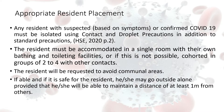Ideally, the resident should be accommodated in a single room with their own bathing and toileting facilities. If this is not possible, it is recommended that the resident be cohorted in groups of two to four with other contacts. The resident should be requested to avoid communal areas and stay in their room, though if it is safe and they are able, they may go outside alone to outdoor spaces, provided they can maintain a distance of at least a metre from others.